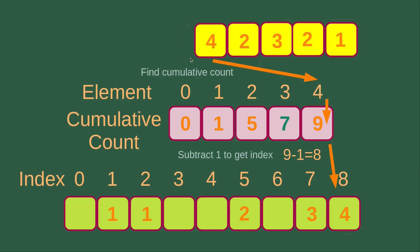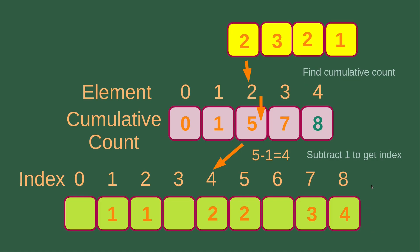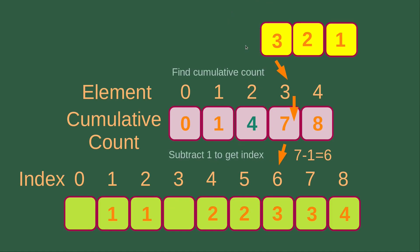We are going to handle element number 4, which is the fifth element of the unsorted list. For element number 4, the cumulative count is 9, and I subtract 1 from 9 to get 8. So the element goes to index 8 of the final answer, and I update the cumulative count from 9 to 8. Then we handle the next element, which is 2. For element number 2, the cumulative count is now 5. I subtract 1 from 5 to get 4, so index 4 is the correct position of element number 2. The cumulative count for element number 2 is now updated to 4.